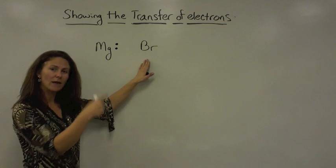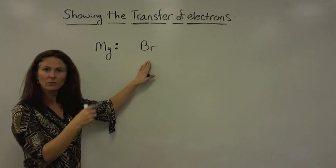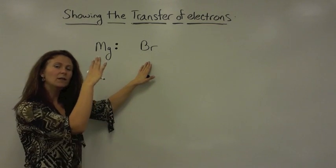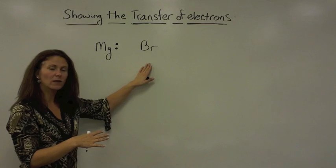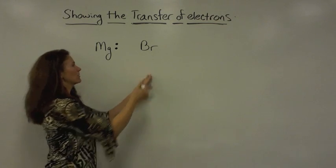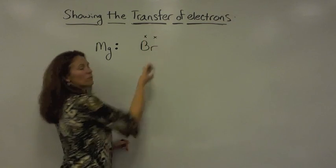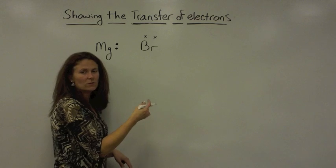Bromine is a halogen in group 7A, so it has seven valence electrons. Any of those elements in 7A has seven valence electrons, and I'm going to represent bromine's valence electrons with an X.